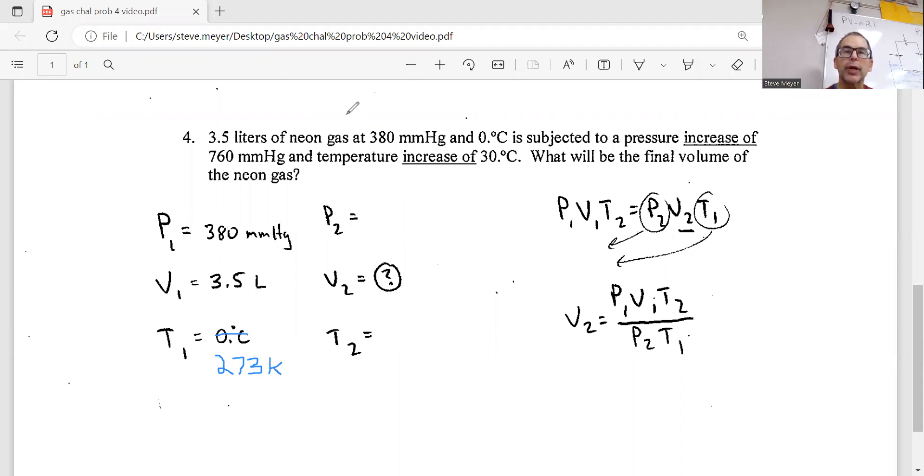Now notice there's a trick here when we do our final pressure and final temperature. It doesn't say the final pressure is 760. It says an increase of 760. Just like if you're making $15 an hour and you've got a $5 increase per hour, you wouldn't be making $5. You'd be making $15 plus $5, which would be $20.